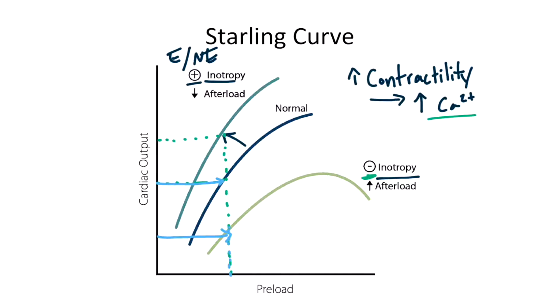It's important to know that changes in afterload also have a similar effect to changes in inotropy. A decrease in afterload means the heart has to pump against less resistance, so cardiac output will increase for a given preload — decreasing afterload would cause the Starling curve to shift upward. In summary, two things can cause shifts in the Starling curve: inotropy and afterload.